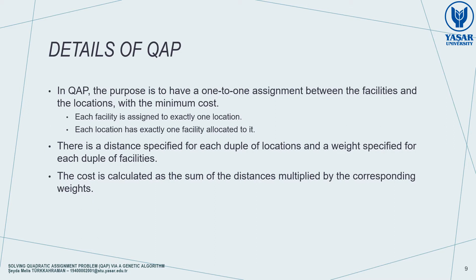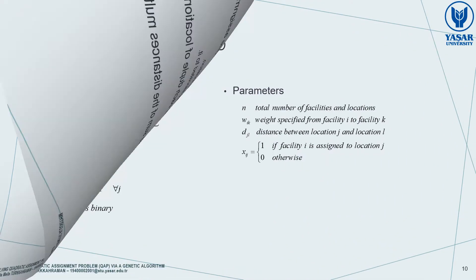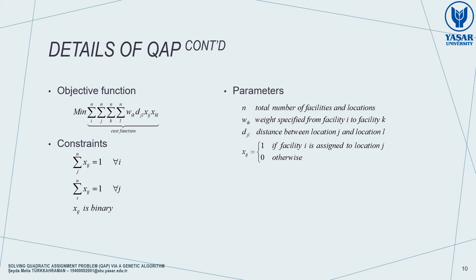In QAP, we try to have a one-to-one assignment between the facilities and the locations, but with the minimum cost. A one-to-one assignment means each facility is assigned to exactly one location, and each location has exactly one facility allocated to it. We have to describe a cost function: there is a distance between each pair of locations, and a weight is specified for each pair of facilities. The cost is calculated as the sum of the distances multiplied by the corresponding weights. This is how we can mathematically formulize QAP — it is actually a combinatorial optimization problem.